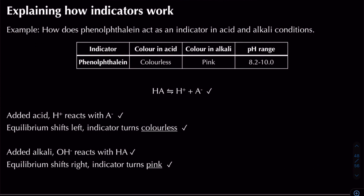How does phenolphthalein act as an indicator? We write out the dissociation equation for the weak acid. In alkali conditions, the conjugate base A⁻ is pink; in acidic conditions, the acid form HA is colourless. Adding acid causes H⁺ to react with A⁻, shifting equilibrium left, making more HA — the indicator turns colourless. Adding alkali with OH⁻ ions reacts with HA, shifting equilibrium right — the indicator turns pink in its conjugate base form.